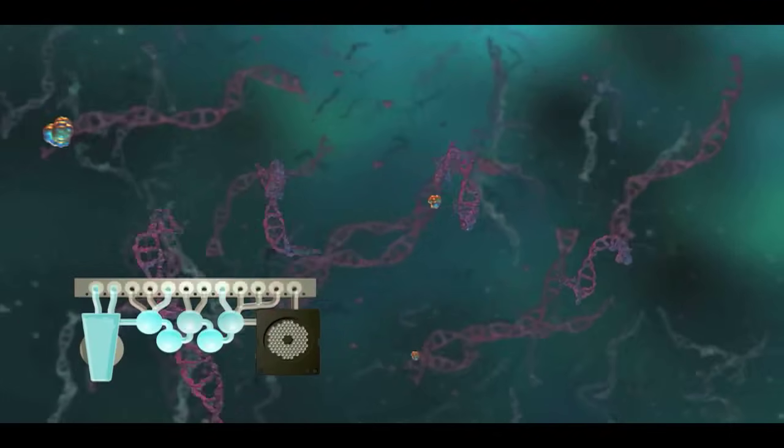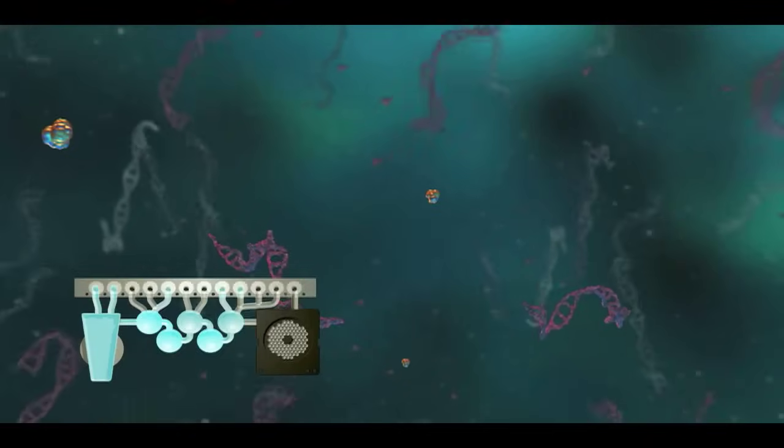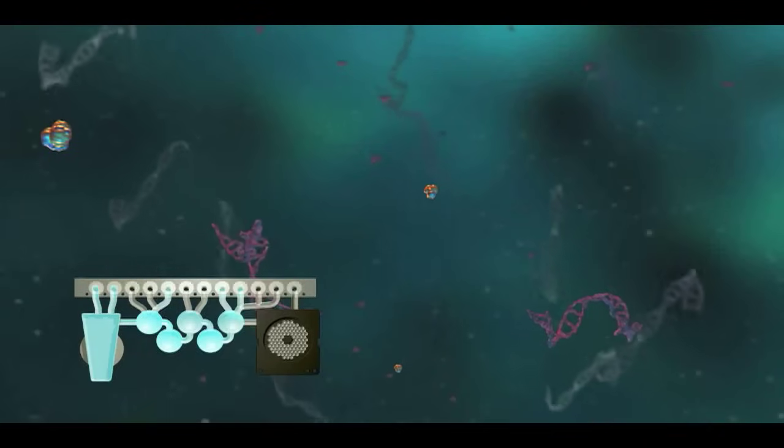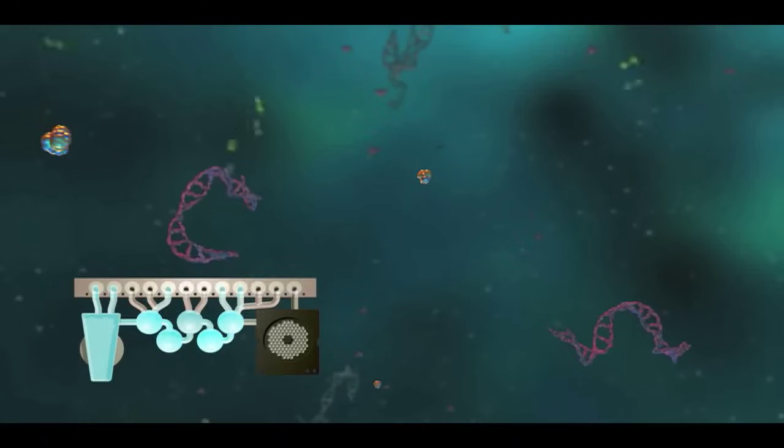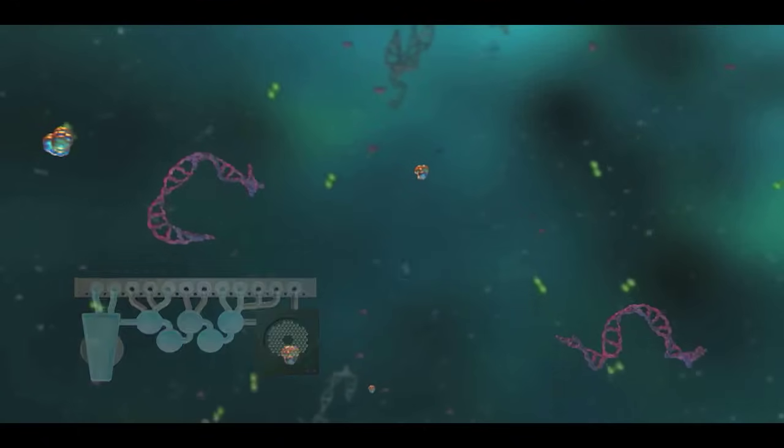The products from the first stage PCR are then diluted to limit any remaining first stage PCR primers. Next, the diluted first stage PCR products are combined with a fresh master mix and then aliquoted to each well in the array.